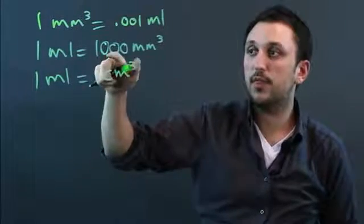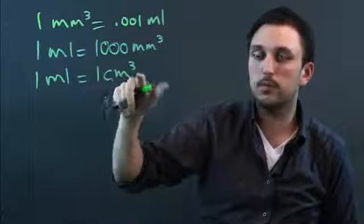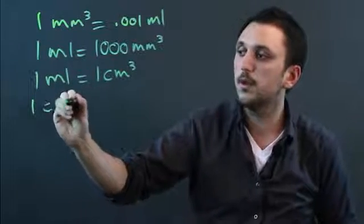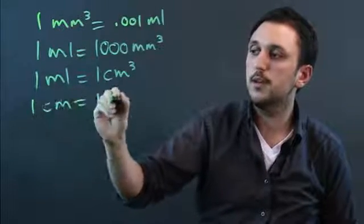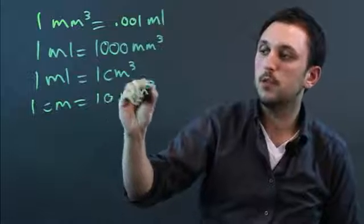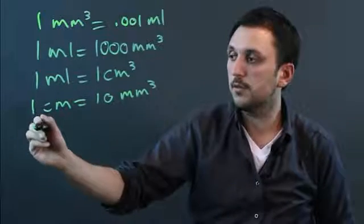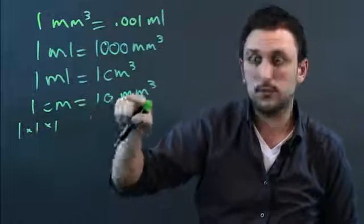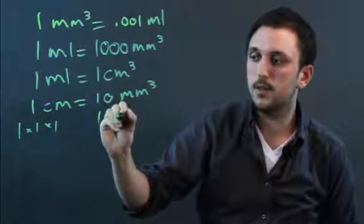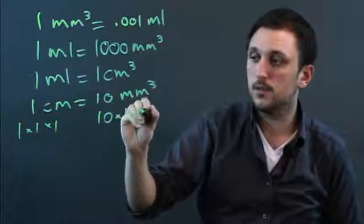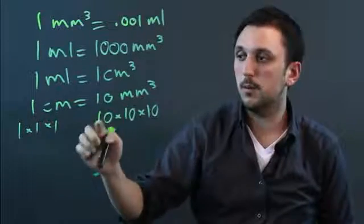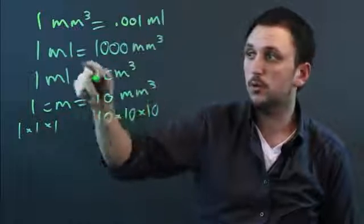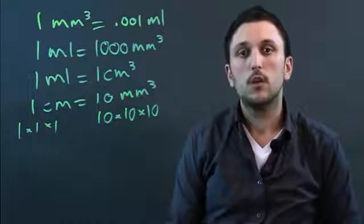The reason we have 1,000 millimeters cubed and only one centimeter cubed is because one centimeter equals 10 millimeters. So, if we cube a centimeter, that's 1 times 1 times 1. We have to do that over here, and that's 10 times 10 times 10. So, we end up with 1,000 millimeters cubed, which equals a milliliter.